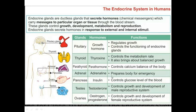The adrenal glands produce adrenalin, which is actually the stress hormone — it prepares our body for emergency. The pancreas is also an endocrine gland shown in the figure; it secretes a hormone called insulin, which controls the glucose level or the sugar level of the blood.